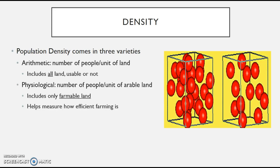You've also got physiological density, which is the number of people per unit of arable land. Arable land is specifically farmable, so here we're only looking at land that's actually being used for farming or that could feasibly be used for farming. This is really a measure of how efficient the farming is — how many people the arable land can support, and how well that land is doing at supporting them.